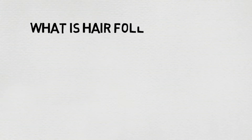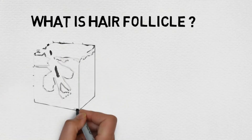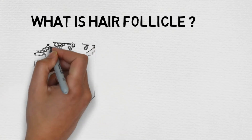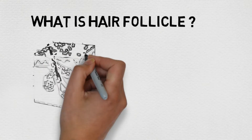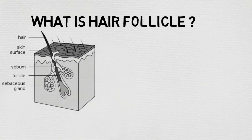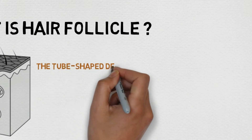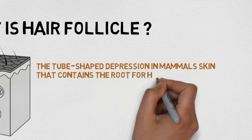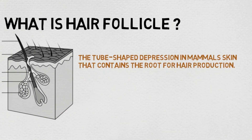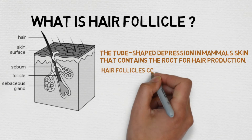What is a hair follicle? The tube-shaped depression in a mammal's skin that contains the root for hair production. Hair follicles come from tissue underneath the skin.